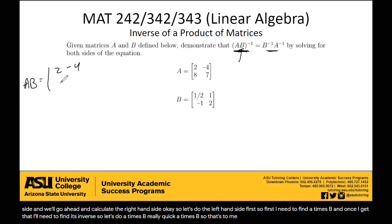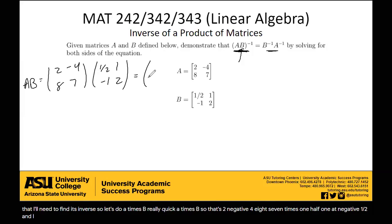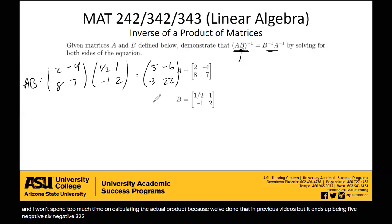So that's 2, negative 4, 8, 7, times 1/2, 1, negative 1, 2. And I won't spend too much time on calculating the actual product, because we've done that in previous videos, but it ends up being 5, negative 6, negative 3, 22. That's A times B.